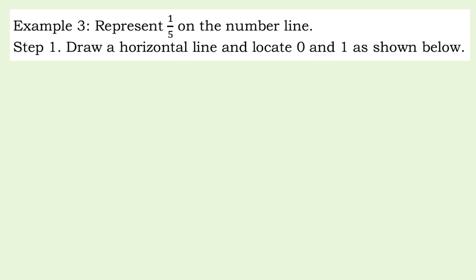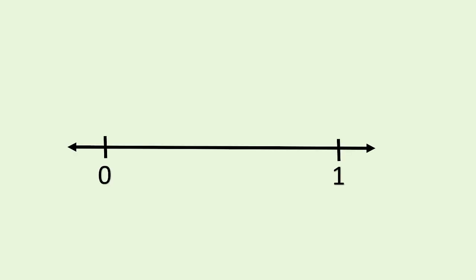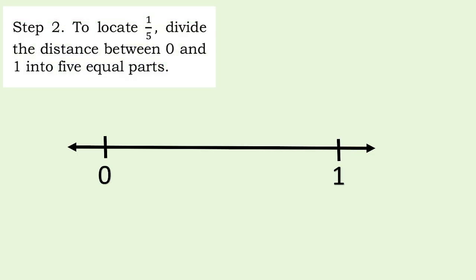Example 3: Represent one-fifth on the number line. Step 1: Draw a horizontal line and mark zero and one as shown below. Step 2: Locate one-fifth — divide the distance between zero and one into five equal parts.